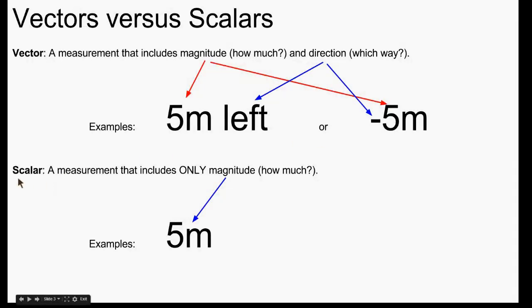A scalar is any kind of physical measurement that we make that only has magnitude. It tells us how much, but not what direction.